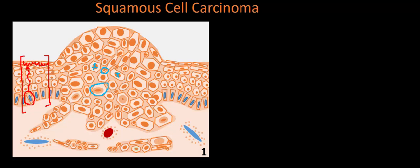The second feature: there are simply too many keratinocytes in the center — essentially a diffuse hyperplasia of the epidermis, histologically referred to as acanthosis. Acanthosis is always relative to your location on the body: the eyelid epidermis is very thin, while the palms and soles are much thicker. What's normal thickness in one area may be abnormal in another, so it's always relative.